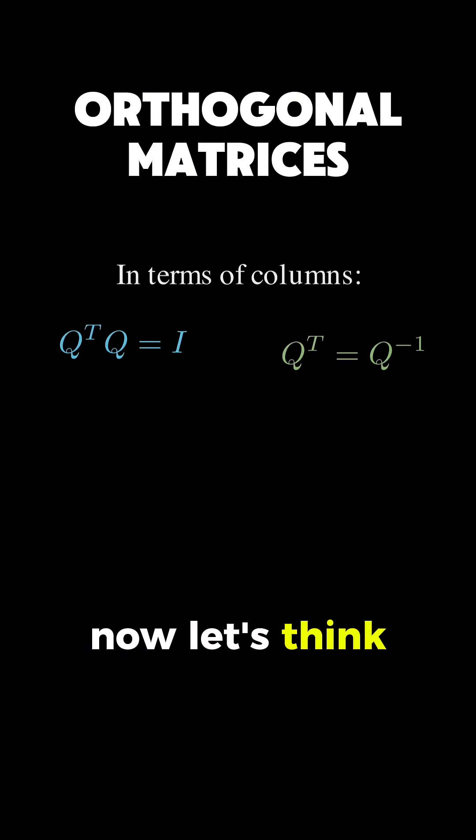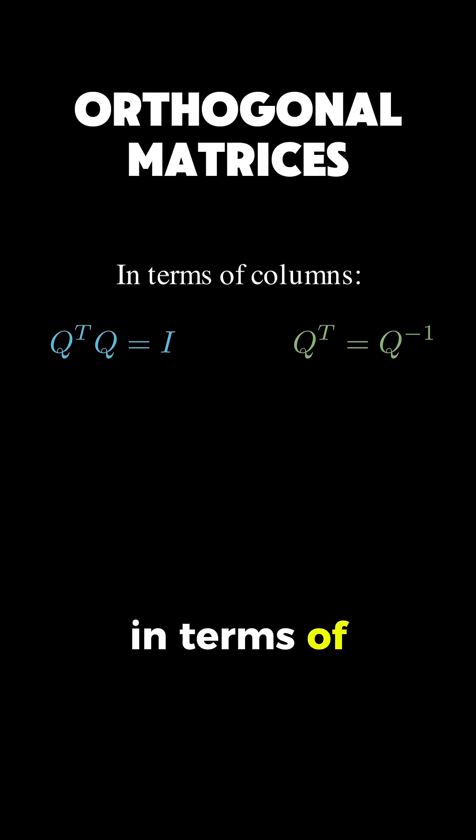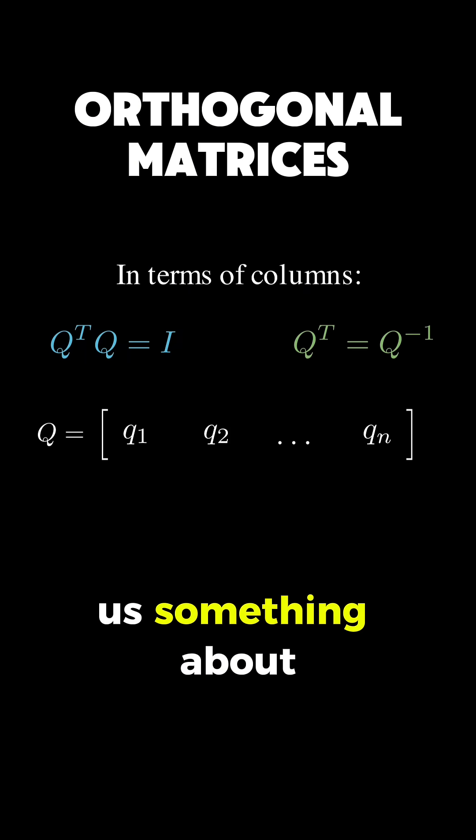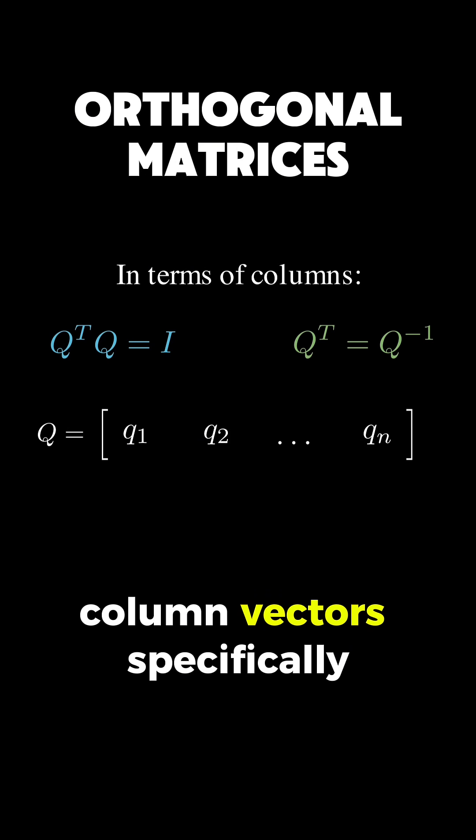Now, let's think about what this means in terms of columns of Q. If you write Q with its columns as q1, q2, up to qn, then the condition Q transpose Q equals I is really telling us something about these column vectors. Specifically...